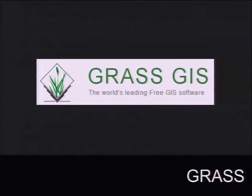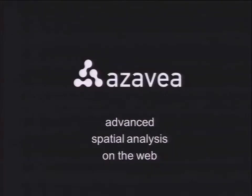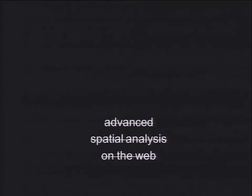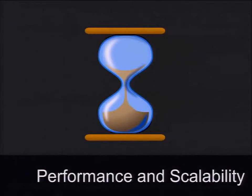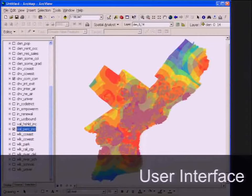The open source equivalent would be things like GRASS GIS. So I started Azavia about 12 years ago to try to build advanced spatial analysis tools like IDRISI and GRASS that would run on the web, and found that that was pretty tough to do. Over the years I came to a few conclusions about what was getting in the way of that. The big one was performance and scalability, just as Javier outlined.